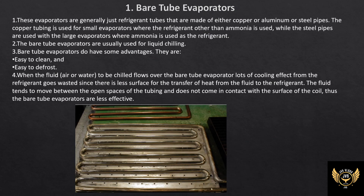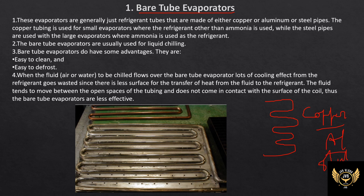First one is the bare tube evaporator. A bare tube evaporator is nothing but a coil — it may be a copper coil, aluminum coil, or steel coil. We use copper, aluminum, or steel because these are good thermal conductors.